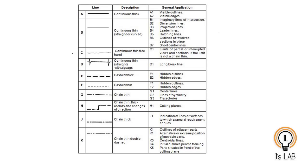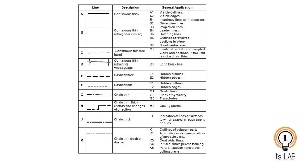The third type, Line C, is a continuous thin freehand line. It is used for limits of partial or interrupted views and sections. If the limit is not a chain line, it gives an interrupted view — you can represent that boundary using this continuous thin freehand line.